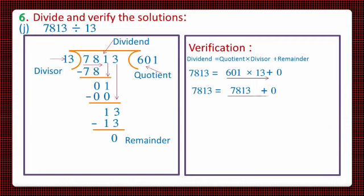And on adding 0 to 7813 we will get 7813 as the answer, and that is equal to our dividend. So both sides are equal. Our left hand side is equal to right hand side.